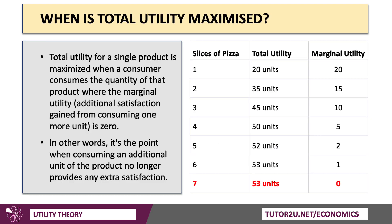Rational consumers aim to maximise utility from a given budget. You consume up to the point where marginal utility is zero if you want to maximise utility — though obviously it depends on the price. Our seventh slice of pizza, for example, might only give us the same total of 53 units, in which case the marginal utility is zero. If you don't have to pay for something, you maximise utility when marginal utility is zero — consuming up to the point where an additional unit no longer provides any satisfaction.